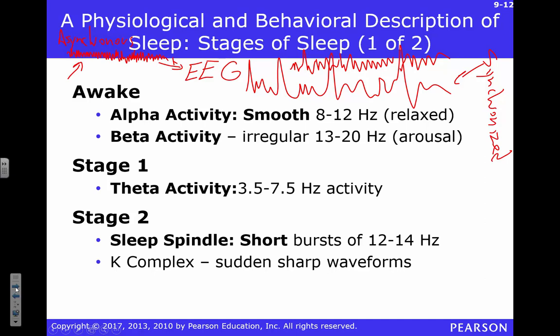I'm not going to expect you to know specific frequencies in each stage of sleep, but I want you to know the general pattern of how these frequencies and amplitudes change as we move through stages. If you're awake, you're in the beta activity range — about 13 to 20 Hz. That means you're awake, attentive, with a very irregular EEG pattern.